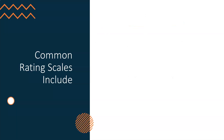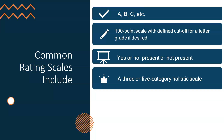Common rating scales include: First, the letters A, B, C, etc., with or without plus and minus. Second, a 100-point scale with defined cut-offs for a letter grade — for example, a letter B is between 80 and 89; B+ is between 87 and 89; B is between 83 and 86; B− is between 80 and 82. Third, yes or no / present or not present, if the rubric is a checklist of items students must show. Fourth, a three or five category holistic scale such as: below expectations, meets expectations, exceeds expectations; or not demonstrated, poor, average, good, excellent.